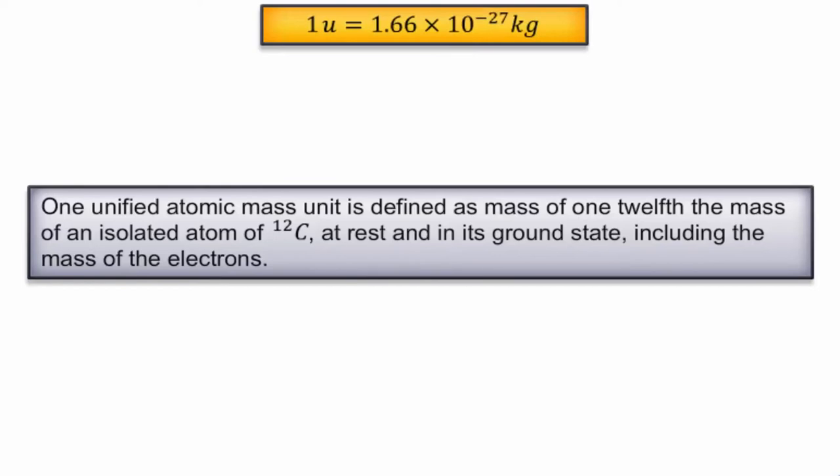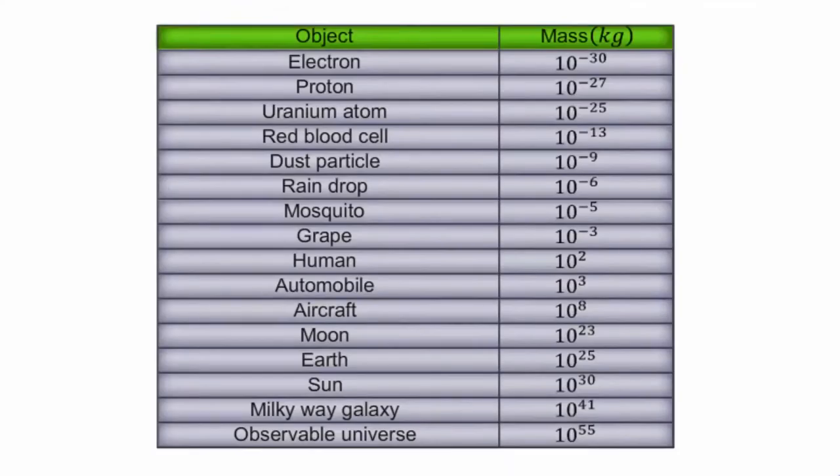The masses of different objects we come across in the universe have a huge variation. The table that follows shows the range and the order of the masses of different objects.